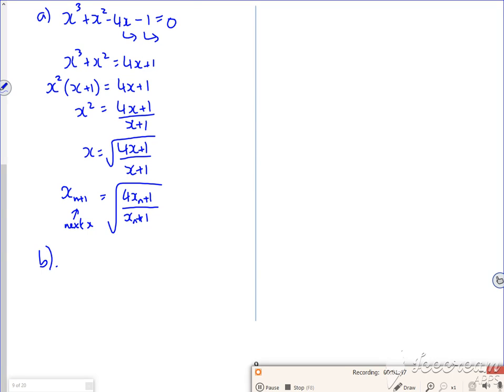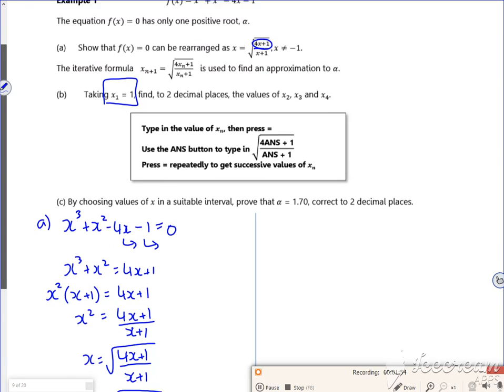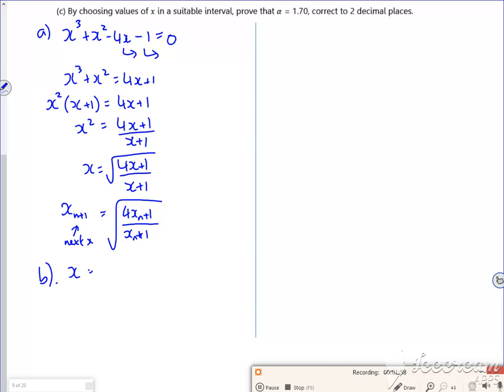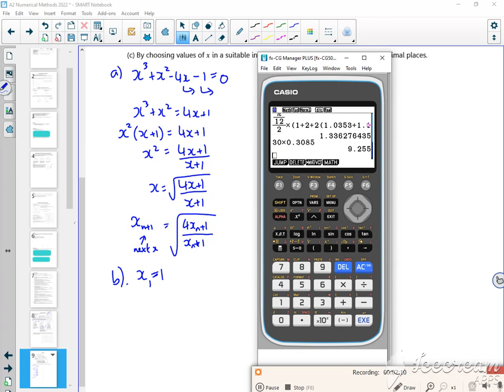Right, part B. So part B, notice how this has changed, x₁ = 1. Right, I'm just going to get my calculator in the run menu, put in the first value. So I'll just type in root fraction 4 lots of ANS plus 1 over ANS plus 1. That gives me the next value out which is root 10 over 2.